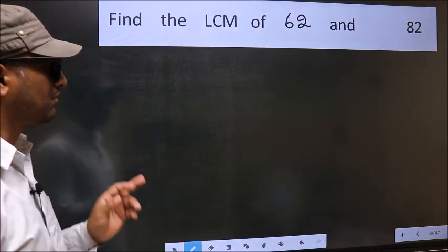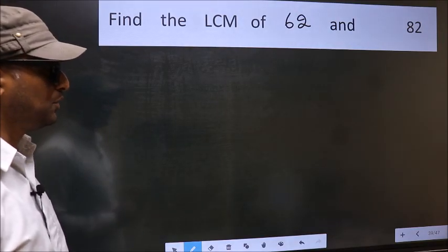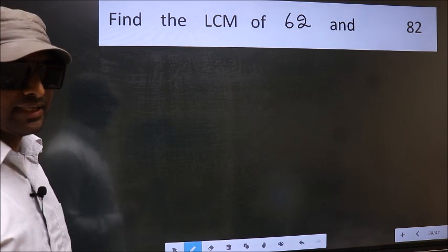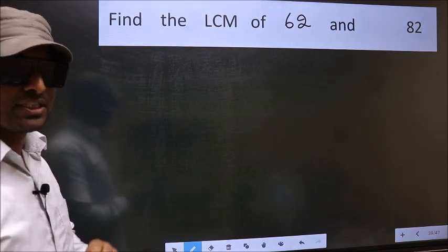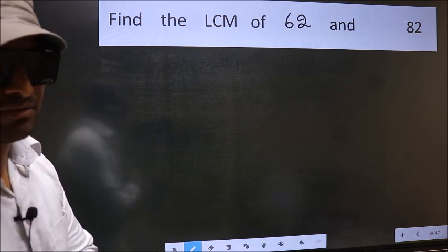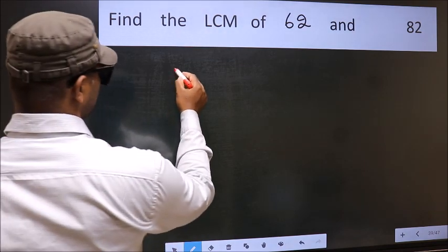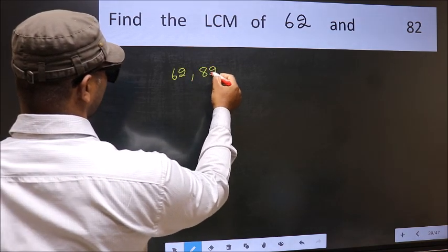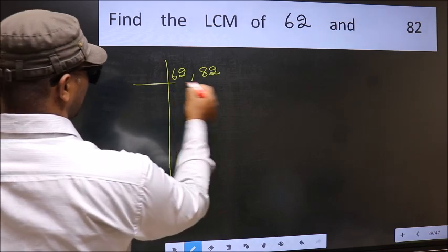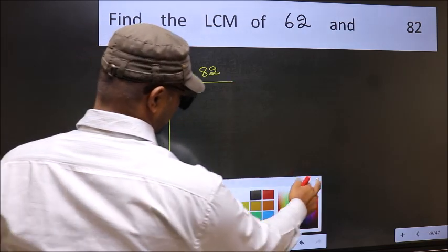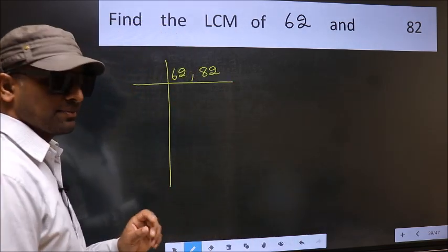Find the LCM of 62 and 82. To find the LCM, we should frame it in this way: 62, 82. This is your step 1.